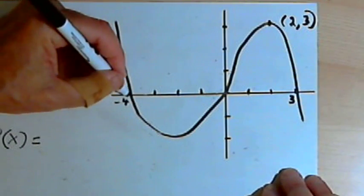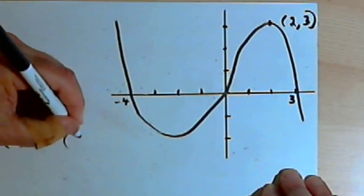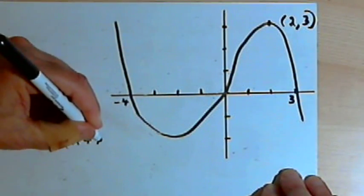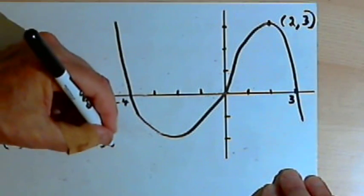The graph goes through the point x equals negative 4, so that means one of the factors is going to be x plus 4. It also goes through the origin, so that means one of the factors is x.